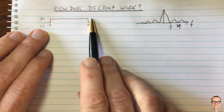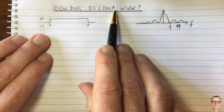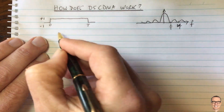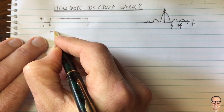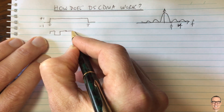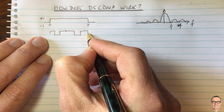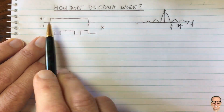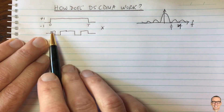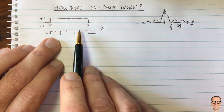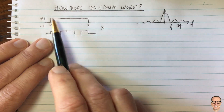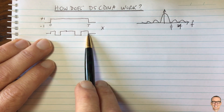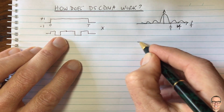Something we could do to allow multiple access is use what's called direct sequence CDMA. We have a sequence - in this example: plus one, minus one, plus one, plus one, minus one, plus one - and we multiply the data we want to send by this sequence. So the signal we're going to send is the multiplication of the data with the sequence. Where we're sending a plus one over that time period, it will be plus one times this sequence, giving us exactly this sequence.